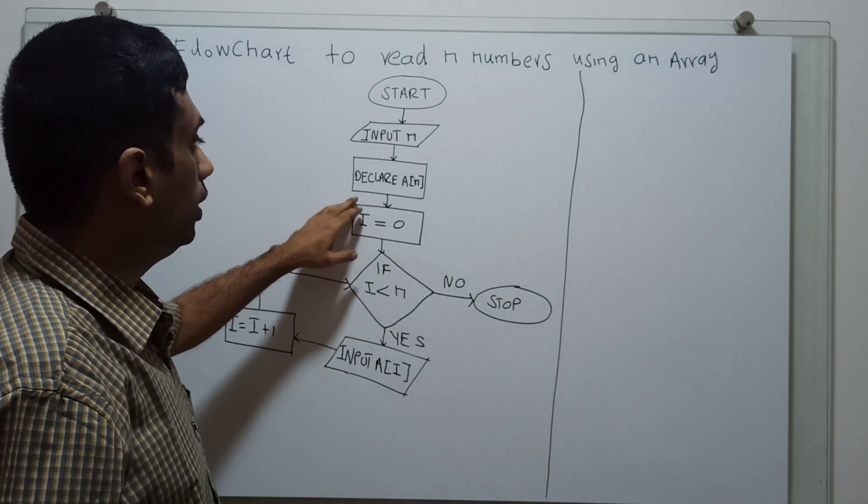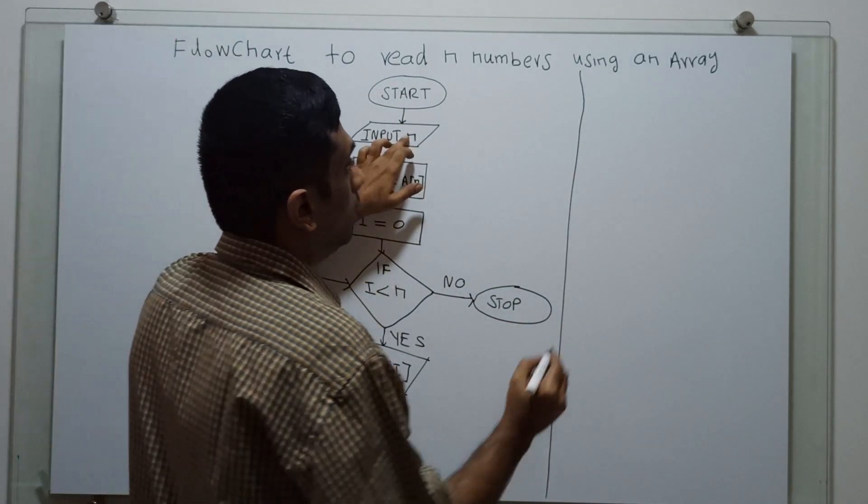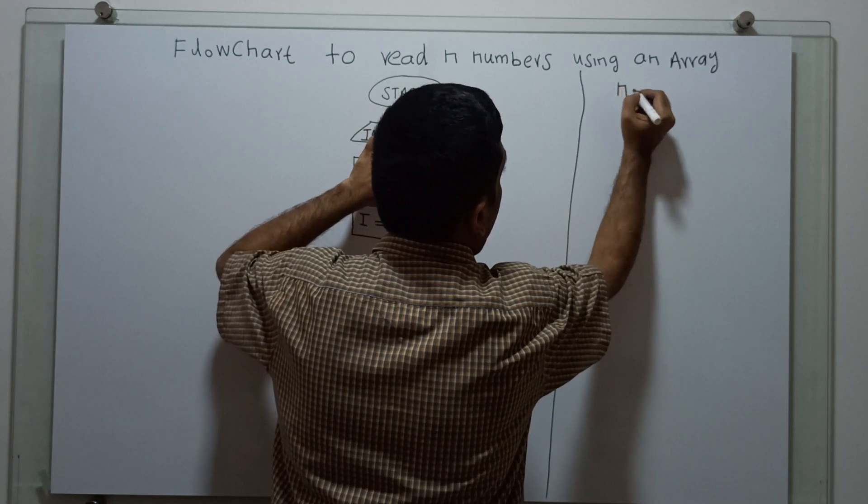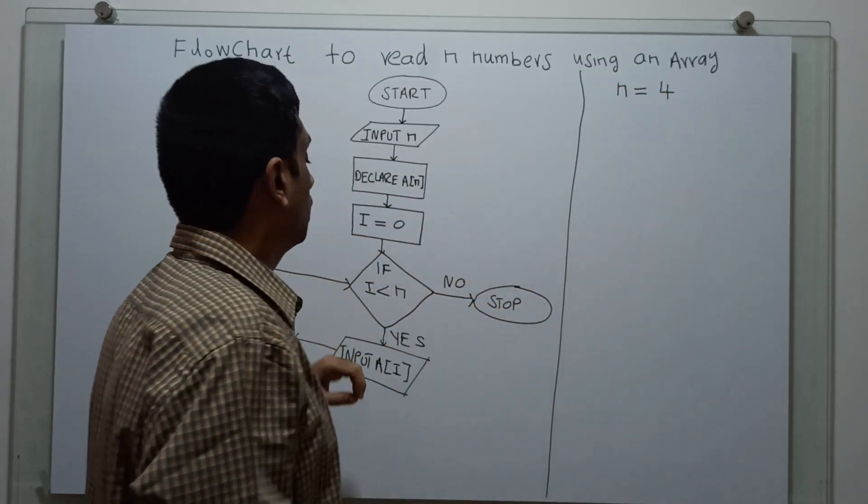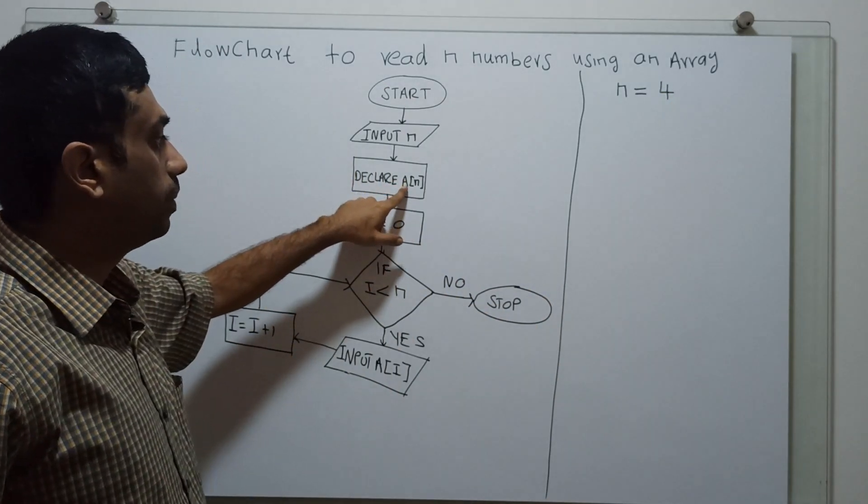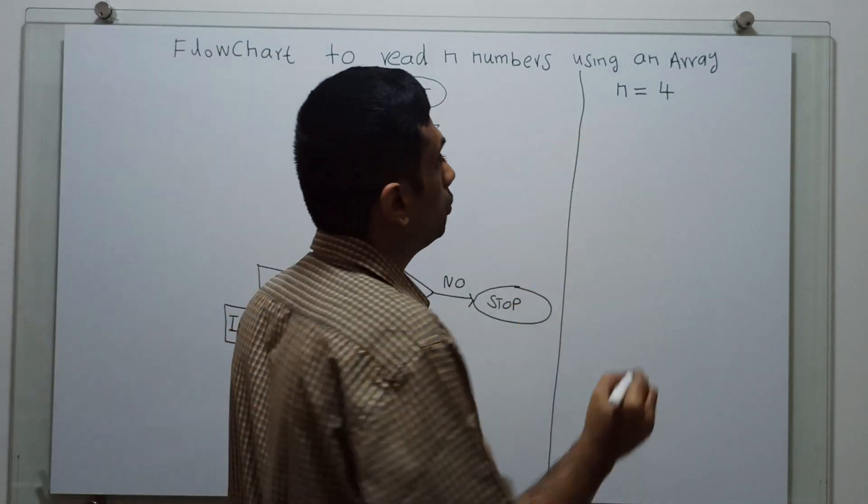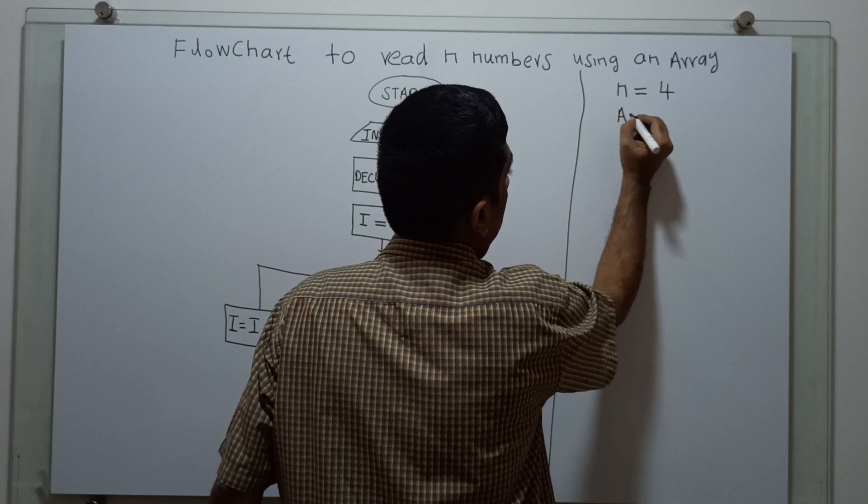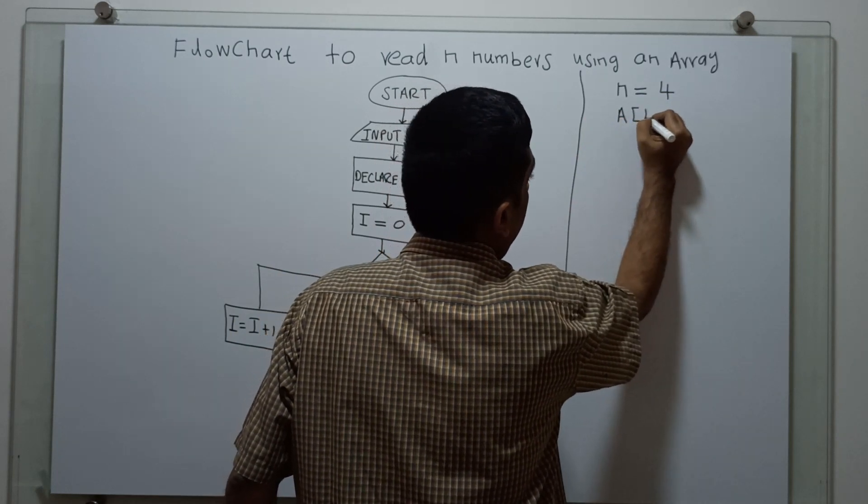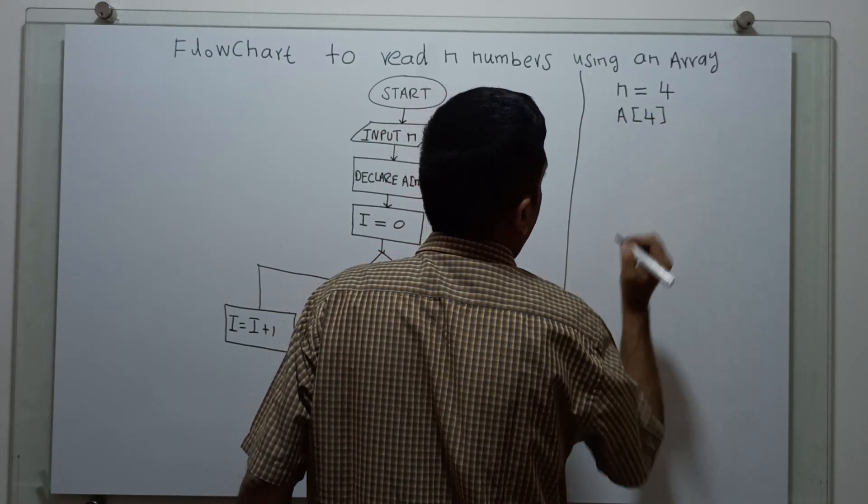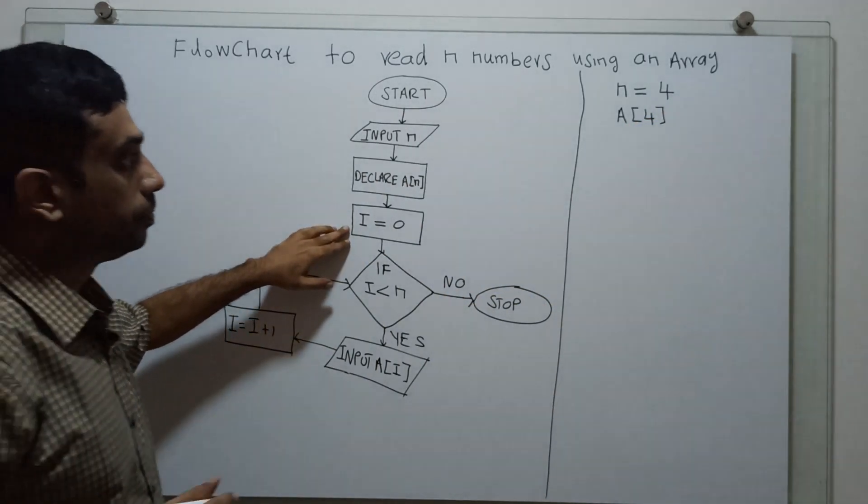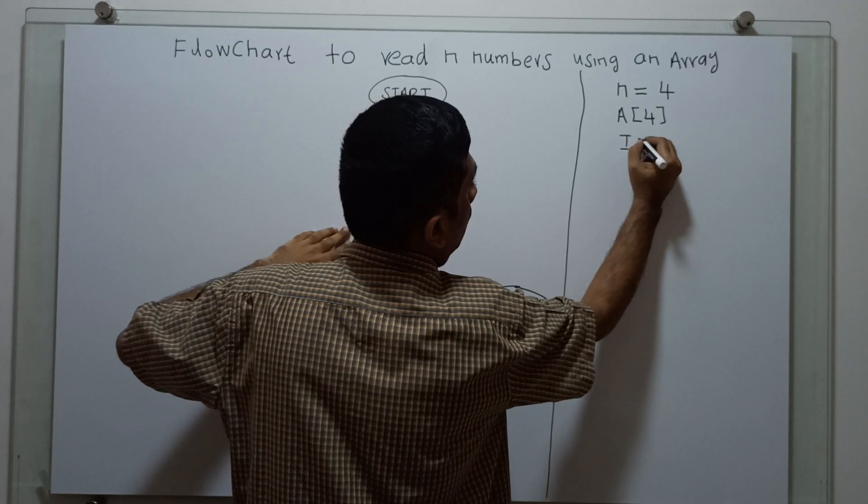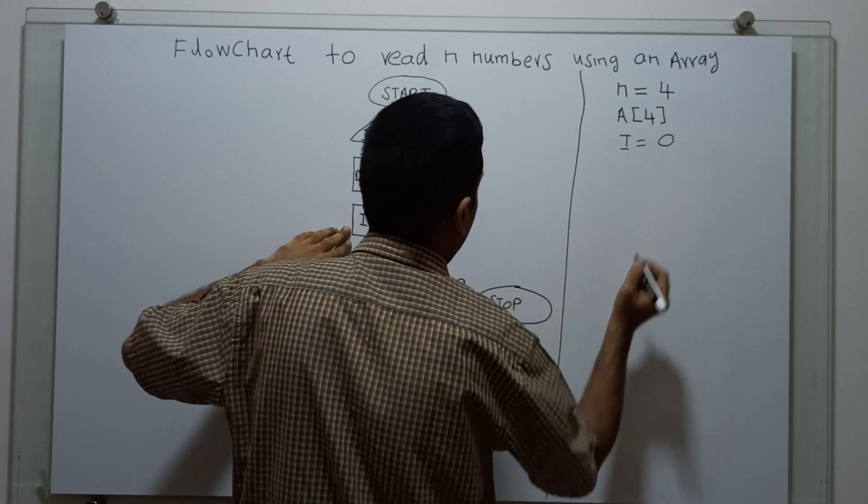I am setting a value. Declare n. Input n. I am giving n equal to 4. Declare a of n. I am declaring an array with the size n. So, my array size is 4. So, i equal to 0. I equal to 0.